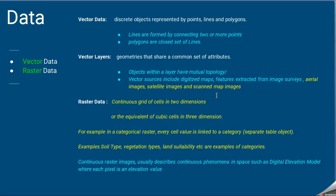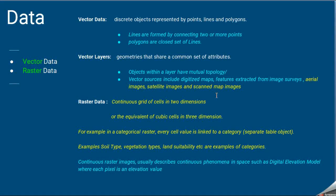Raster data is a continuous grid of cells. It can be in two dimensions or three dimensions, for example cubic cells. Categorical raster data includes things like soil type, vegetation type, and land suitability. For example, if we store the coordinates of a field and need to find the land category for that coordinate, we need a category table. This kind of data we call categorical raster data.